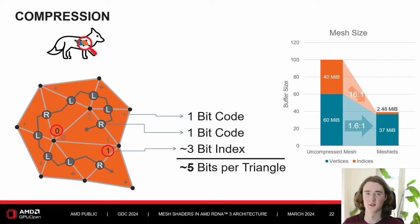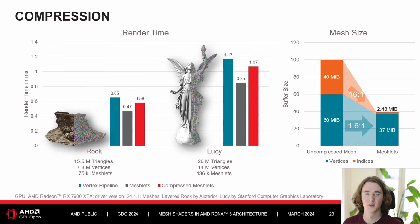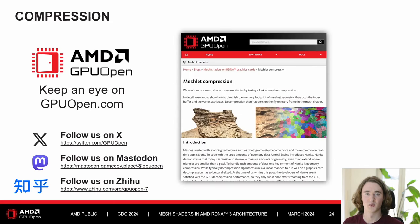Combined with vertex quantization, we've reduced the buffer size to less than 40% of the input buffer size. To evaluate performance of the compressed mesh shader pipeline, we compared two large triangle meshes against a regular vertex shader pipeline and a simpler uncompressed mesh shader pipeline. Even though decompression of the triangle strip and dequantization of vertex attributes runs for every meshlet in every frame, we still outperform the regular vertex shader pipeline by about 9%. This means you can store and render compressed data directly on the GPU without needing any compute passes to decompress it first.